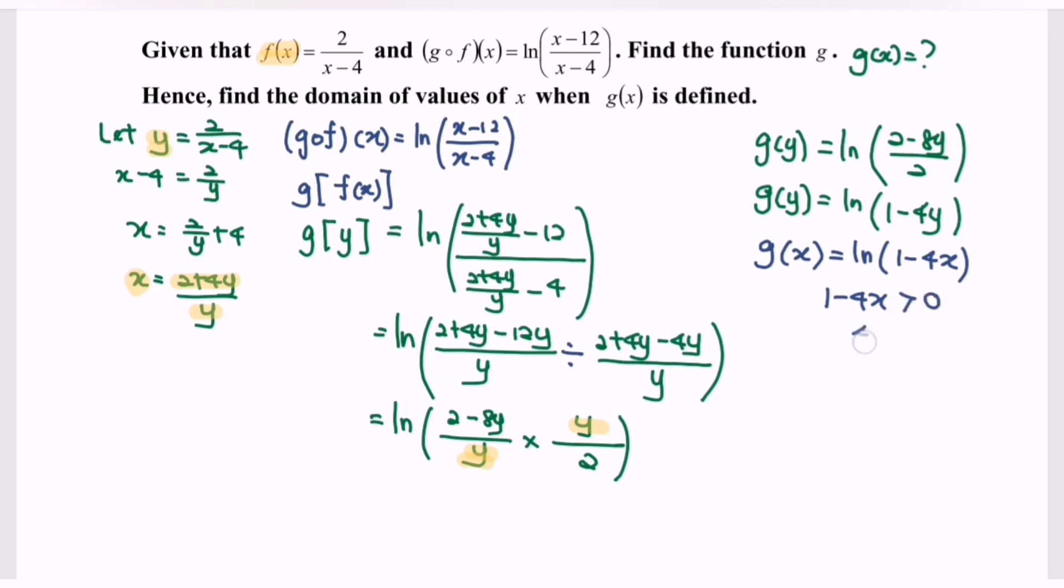So we will have 4x is less than 1. Finally, x is less than 1 over 4. The domain for g will equal negative infinity to 1 over 4, where 1 over 4 is not included. So that will be the domain for g.